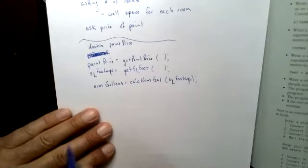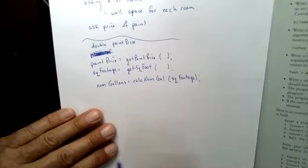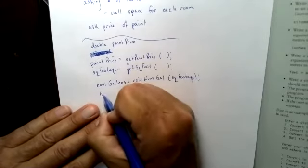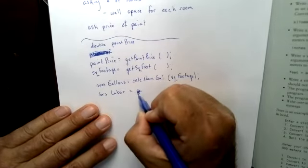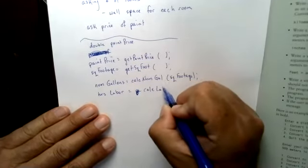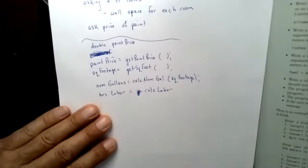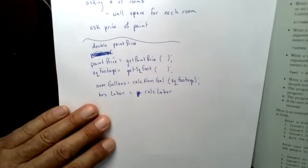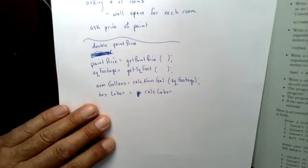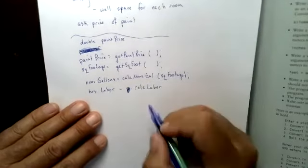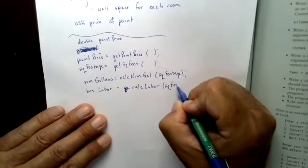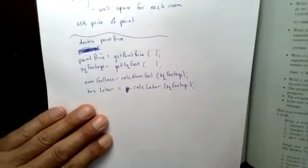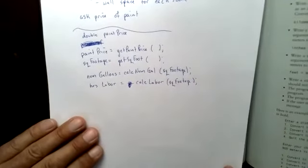So now I need, I'm going to have a value for num gallons. Now I'm going to need something like hours labor. And I might call this something like calc labor. Now you see how I'm doing all this ahead of time. And when I get ready to type the program, I'll have thought all this out, and I'm not confusing thinking with typing. Need to separate those two. In order to calculate the labor, again, I need square footage.